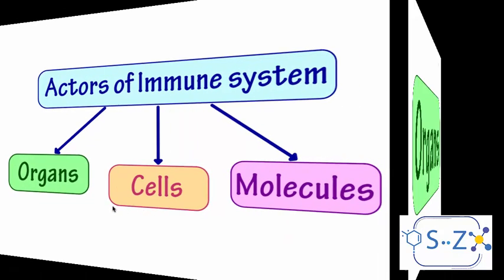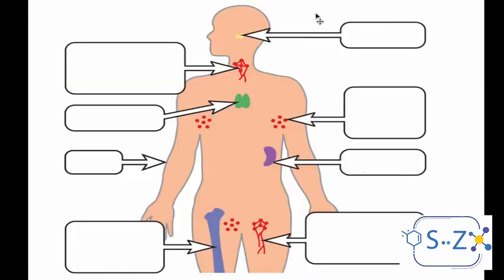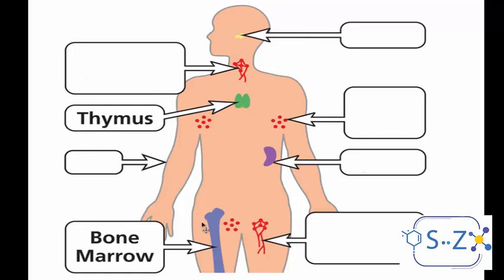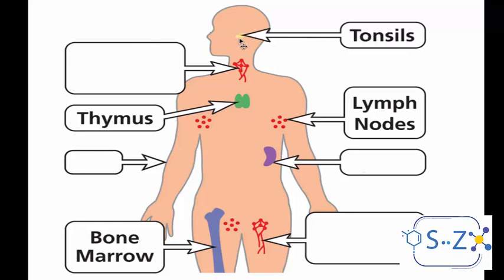In this video we're going to learn about each of these three actors. Starting with the organs — the organs of the immune system, as we see in this diagram, are located all around the body. First, we have the thymus, found in the chest, and the bone marrow, found inside all the bones of the body, though as we grow old it becomes restricted to the long bones. We also have the lymph nodes found all around the body, including specialized ones like the tonsils.